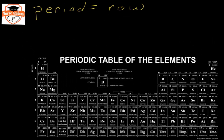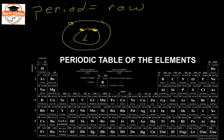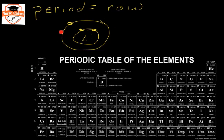Each period represents a shell of electrons on an atom. For example, lithium has three electrons total — two in the first shell and one in the third shell. This exactly corresponds to the total number of electrons in the atom, so each period represents a shell on an atom.